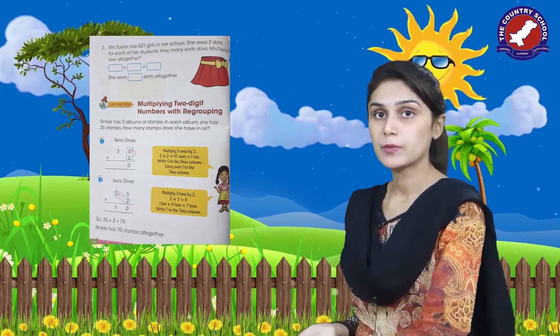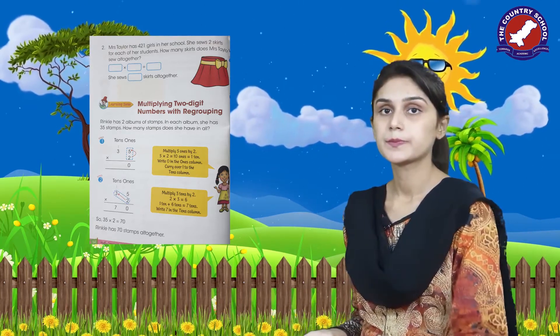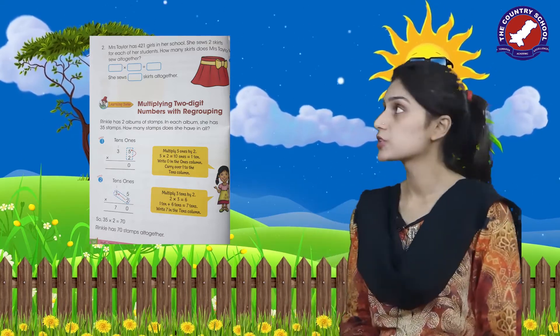Open your Maths Carnival book to page number 54. Now let's start multiplication of a two-digit number with regrouping. 'Wrinkle has 2 albums of stems. In each album she has 35 stems.'